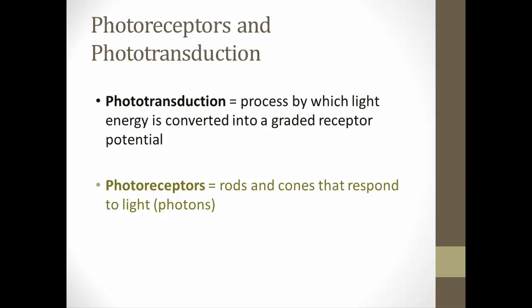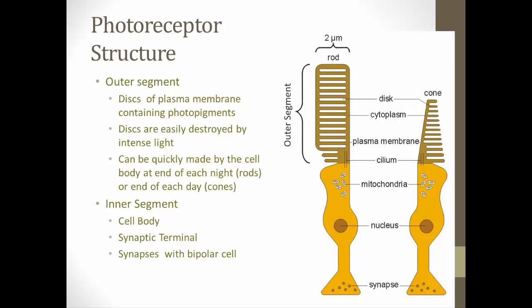The cells that start this whole process are the photoreceptors — the rods and cones — and they respond to light or photons of light. A photon is just a different way of looking at light instead of a wavelength. Let's look at the different structures of the rod and cone in more detail.